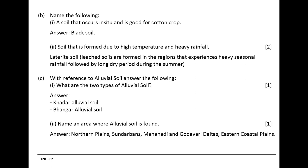With reference to alluvial soil answer the following. What are the two types of alluvial soil? Answer: Khadar alluvial soil and Bangar alluvial soil. Name an area where alluvial soil is found. Answer: northern plains, Sundarbans, Mahanadi and Godavari deltas, eastern coastal plains.